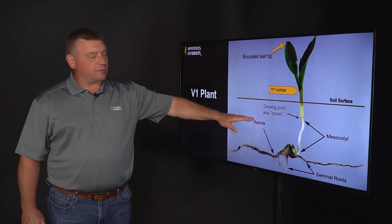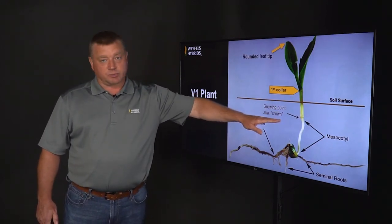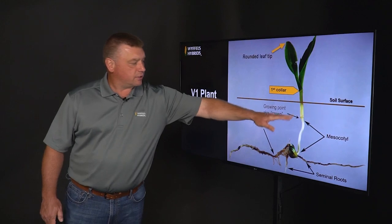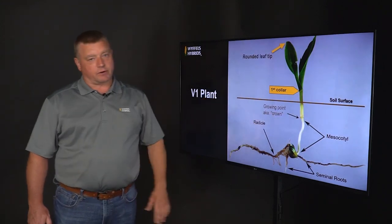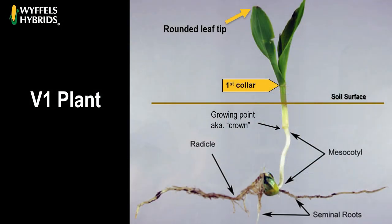On a V1 corn plant, the growing point is below the soil surface — this is often called the crown of the plant. That plant is connected to the seed, and the seed roots are providing the nutrients and water for that small corn plant through the mesocotyl.